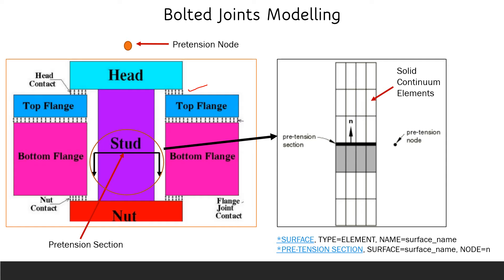These are the main important parameters to be considered — the applied preload should be transferred without any error. For example, if you miss the contact between the top flange and bottom flange, the load cannot be transferred from top to bottom flange since there is no contact. Also, before creating the pretension section, we need to understand that the section should be created at least away from the contact region in order to reduce convergence issues and simulate better preload conditions.